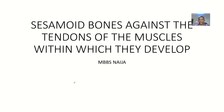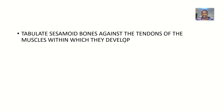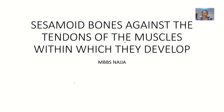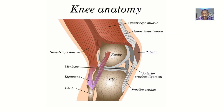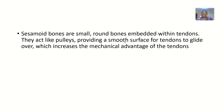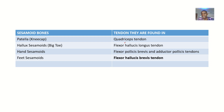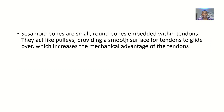For this question, it's quite simple — we are asked to tabulate the sesamoid bones against the tendons of the muscles within which they develop. So sesamoid bones and the tendons of the muscles in which they develop. We have it here as a simple table, but let's first define what a sesamoid bone is.